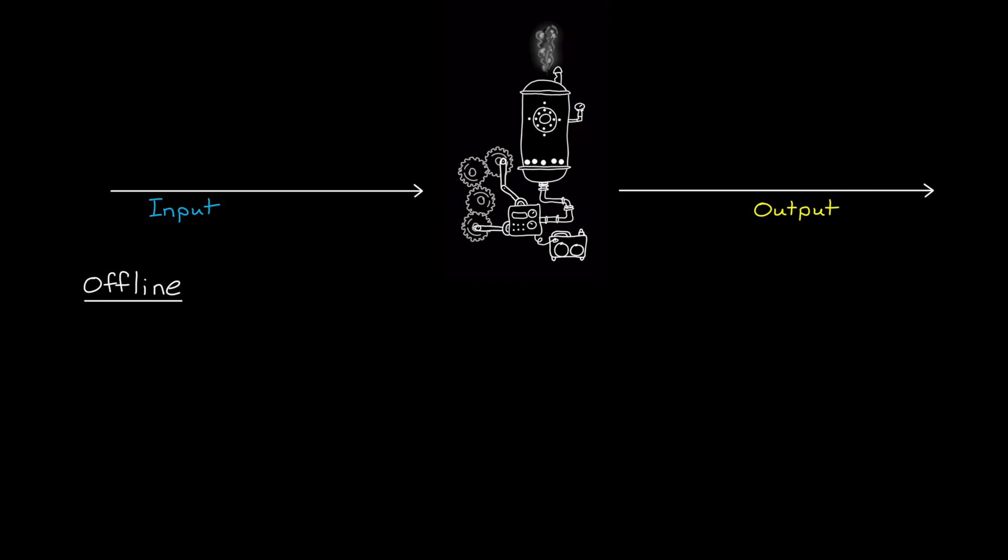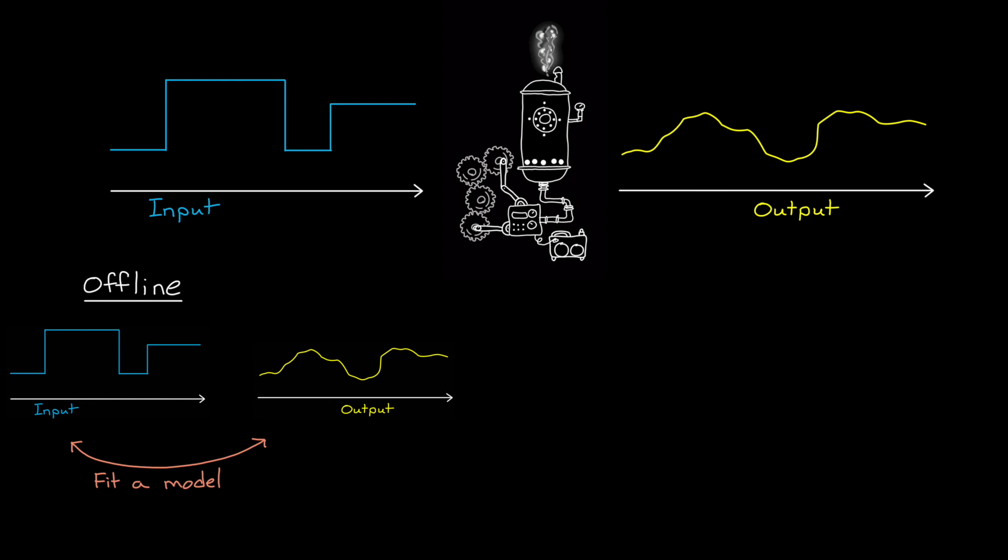So far in this series, we've talked about offline system identification methods. That is, identifying a model using data that was previously collected from the system, and then used all at once to estimate the model.